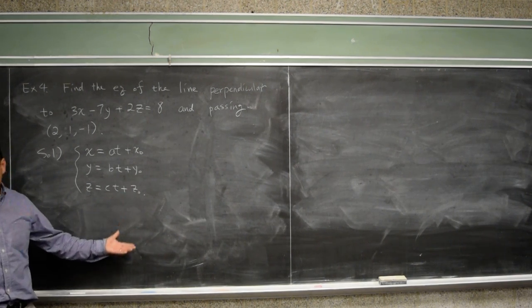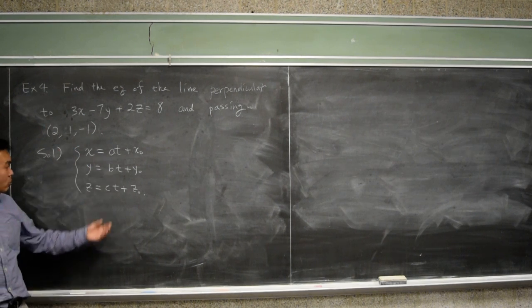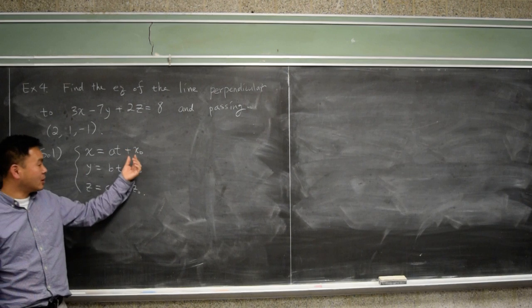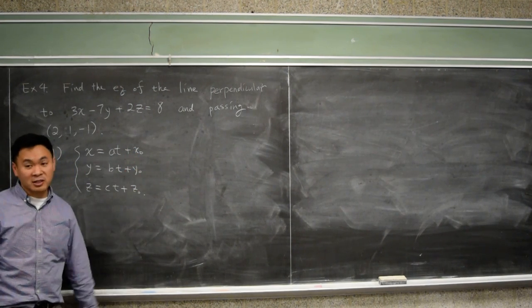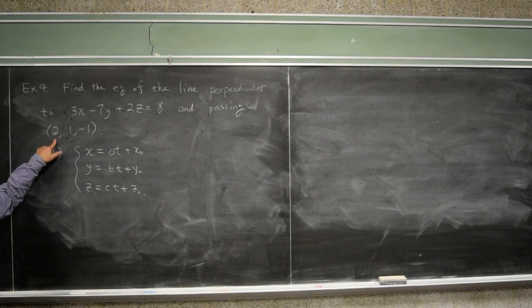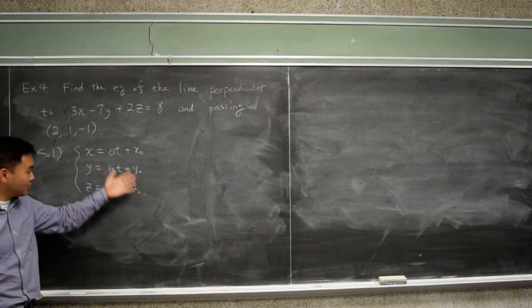Now, therefore, to get a line equation, you need the vector A comma B comma C, and you also need X naught, Y naught, Z naught. Now, what can we take for X naught, Y naught, Z naught? This one, right? We're given the point, so that's good. And then what can we take for A comma B comma C?